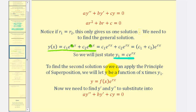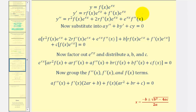So when the characteristic equation has two real but equal roots, this only gives us one solution. To find the second solution so we can apply the principle of superposition, we will let y be a function of x times y₁. So y equals f of x times e to the power of rx, which is y₁. Now we're going to perform substitution into our differential equation, but to do this we'll have to find y prime and y double prime. I've already figured them out, but you may want to pause the video and check these.